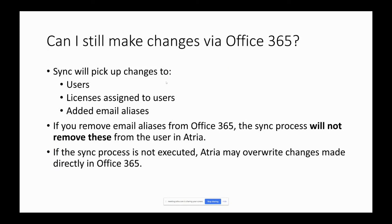If you can make a change through Atria, you should do it through Atria. However, you can make changes through Office 365 — the sync will pick up any changes to users, licenses assigned to users, and any added email aliases. That nightly sync process will true things up if they've been changed in Azure AD. Note: if you remove email aliases from Office 365, the sync process will not currently remove these from the user in Atria — that's intentional. If the sync process isn't executed, whatever you have in Atria could potentially overwrite changes made directly in Office 365. So if you change someone's name or address in Office 365, Atria doesn't know about that until the sync has run.